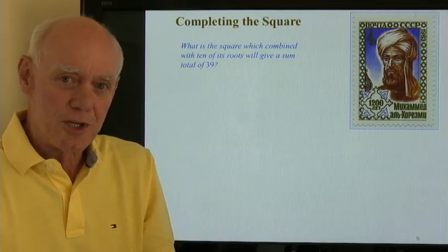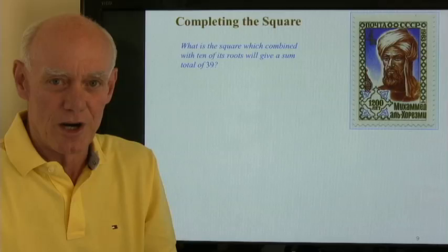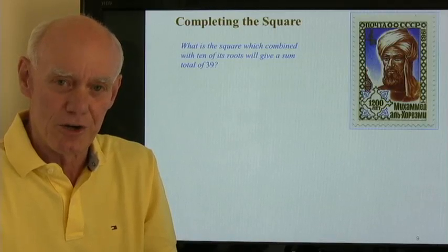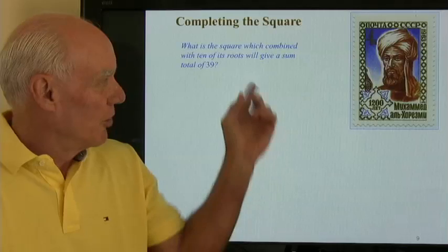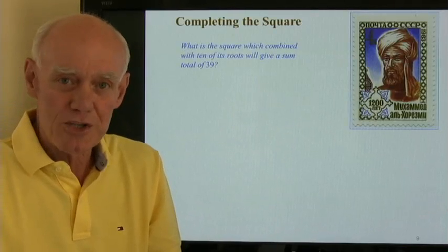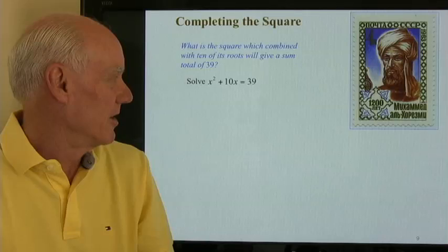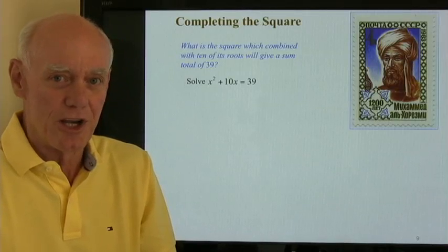Well, when al-Kharizmi talks about the square in our notation it would be x squared. When he talks about the root in our notation it would be x. So this same problem right here or question in our notation looks like this. Solve x squared plus 10x equals 39.